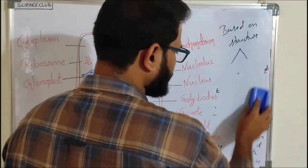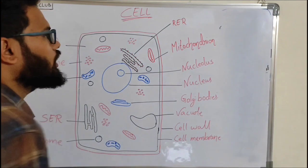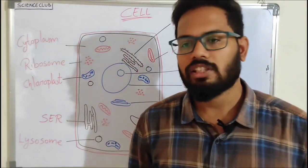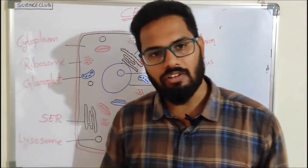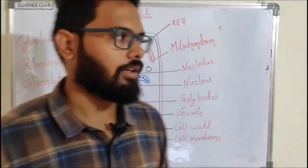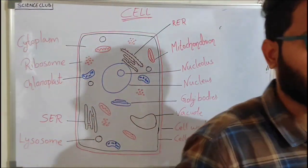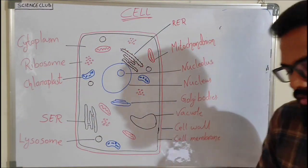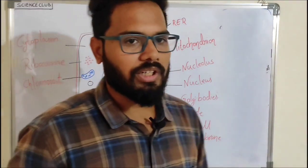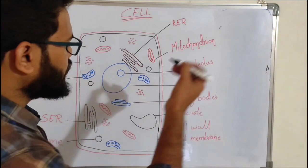Next, we are going to discuss the structure of the plant cell. There is a small difference between the plant cell and the animal cell. The plant cell contains a cell wall whereas the animal cell does not — there is an absence of cell wall. The cell wall in plant cells helps in protection and gives a rigid structure to the cell. There is also a cell membrane which acts as a selectively permeable membrane.